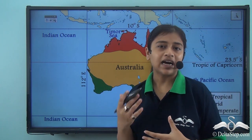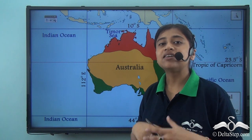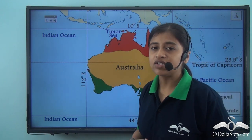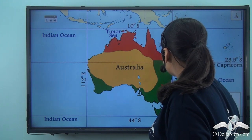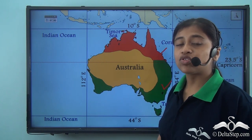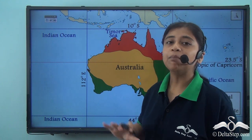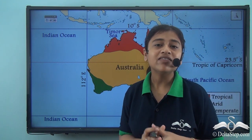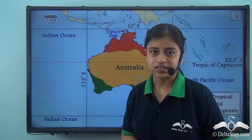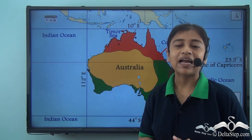Looking at the map again, the Tropic of Capricorn passes almost through the centre of the continent, dividing it into two temperature zones — the northern torrid land and the southern temperate land, making the northern portion comparatively hotter. Studies show that more than 70% of the mainland receives less than 500 millimetres of rainfall annually, which is why Australia is often regarded as an arid or semi-arid continent.